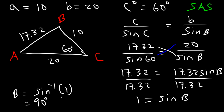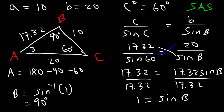There's only one answer here, because 180 minus 90 gives 90 again. To find angle A, that's 180 minus 90 minus 60, which is 30 degrees. And so that's how you solve this particular triangle — it turns out that it's a right triangle.